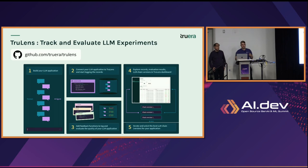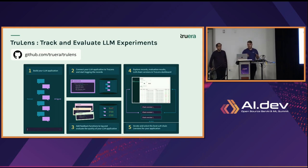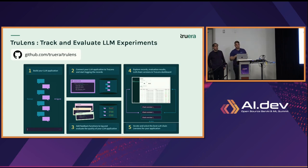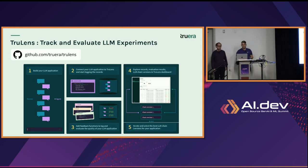This is one of the core problems we built TrueLens for. TrueLens is an open source project to track and evaluate LLM experiments. Once you've built your LLM app, you can connect it with TrueLens to start logging and tracing the inputs, outputs, and metadata. You can add feedback functions to evaluate these traces to understand the quality of the inputs, how well the application is responding, and the quality of those contexts being retrieved. Then you can explore the records, understand the evaluation results, iterate, and select the best chain application version to roll to production.